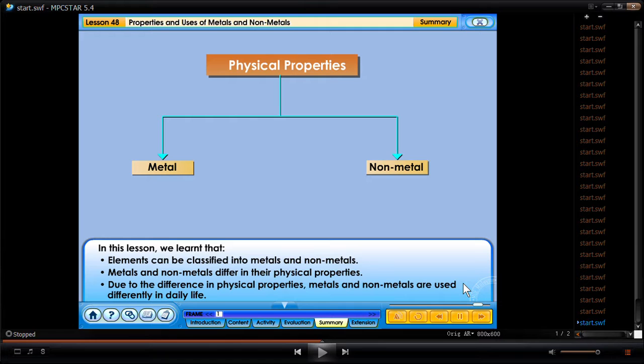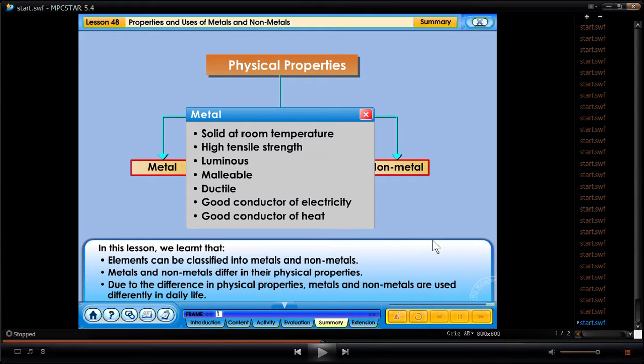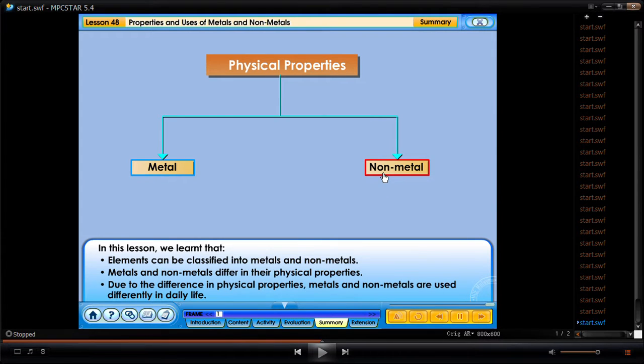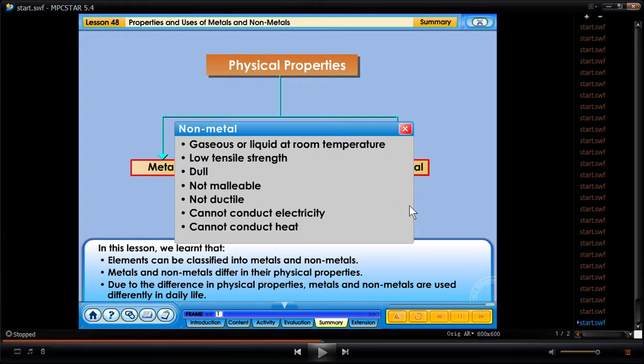Click metal and non-metal to know their physical properties. Metals: solid at room temperature, high tensile strength, luminous, malleable, ductile, good conductor of electricity, good conductor of heat. Non-metals: gaseous or liquid at room temperature, low tensile strength, dull, not malleable, not ductile, cannot conduct electricity, cannot conduct heat.